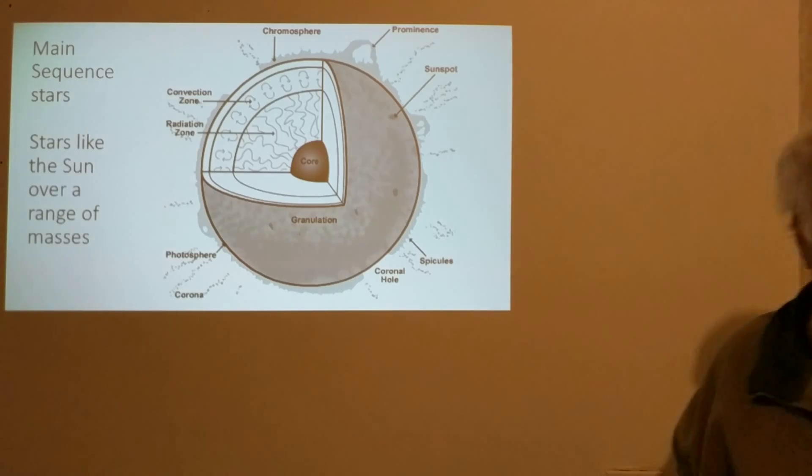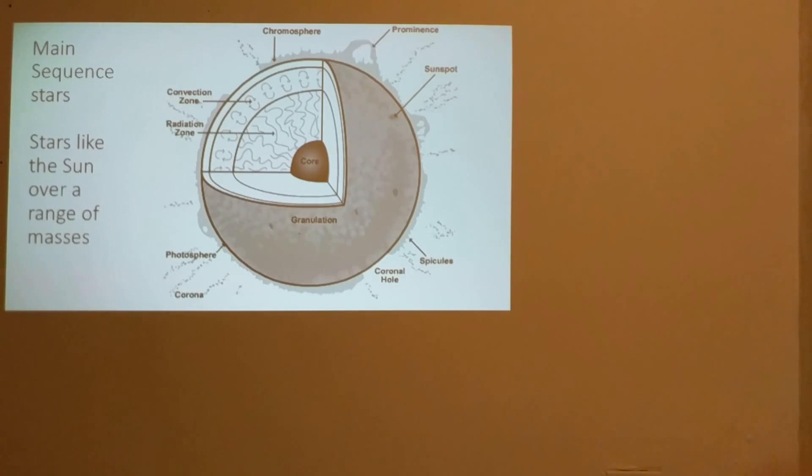Stars like the Sun have very similar structure, and as we go to higher mass stars five or ten times the mass of the Sun, certainly the structure changes, as we go to lower mass stars as well, down to a half or a tenth of the mass of the Sun. We have a different structure, but we won't focus on that so much.